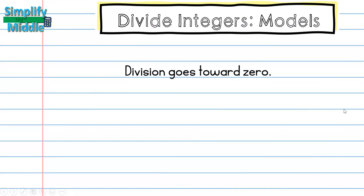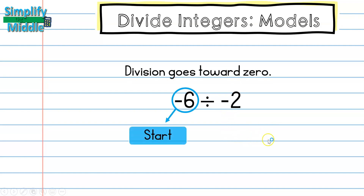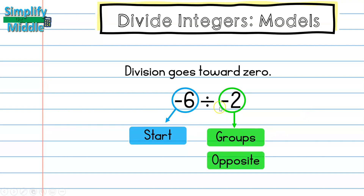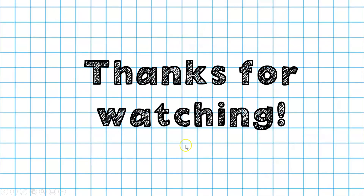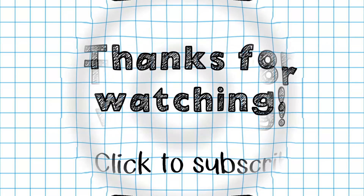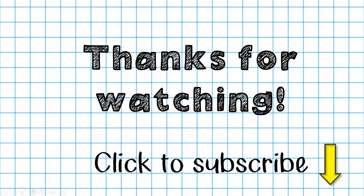Let's recap: division goes towards zero. Our first number is where we start from, and our second number tells us how many groups we have. That second number could also be telling us to find the opposite at the end of the problem. That wraps up our lesson — thanks for tuning in, feel free to subscribe to watch more lessons.